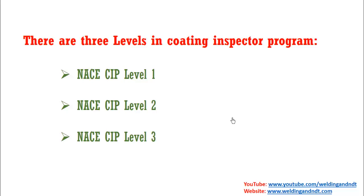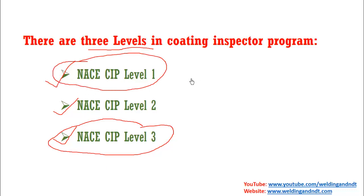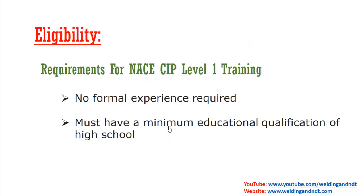Now let's start with the levels. There are three levels in the NACE Coating Inspector Program. First is NACE Level 1 — you start with Level 1, then go to Level 2, and then Level 3. Level 3 is the final and senior-most level, while Level 1 is the starting point of the Coating Inspector Program.